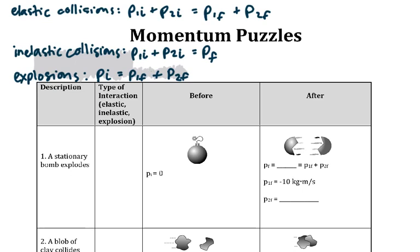So a quick review before we start. Elastic collisions occur when the two objects start apart and end apart.